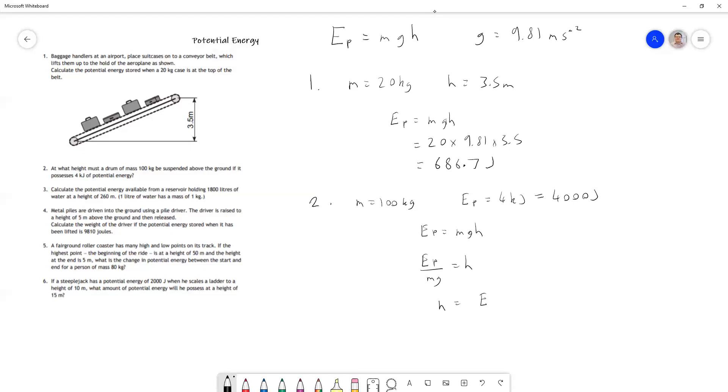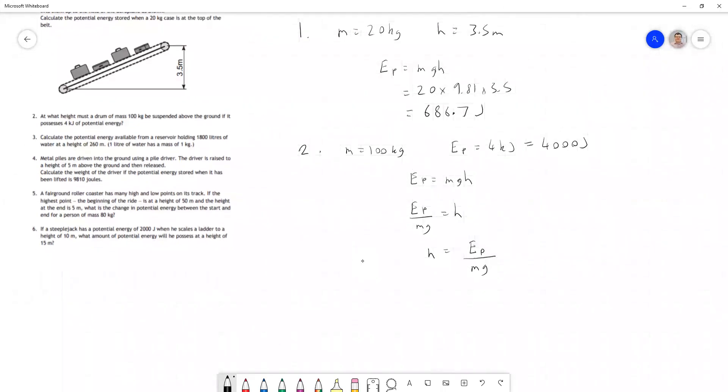Having written all of that out, we can now work out the answer. The potential energy is 4000 joules, mass is 100, and g is 9.81. We can calculate the required height: 4000 divided by (100 times 9.81) equals 4.08 meters to two decimal places, because height is always measured in meters in these questions.